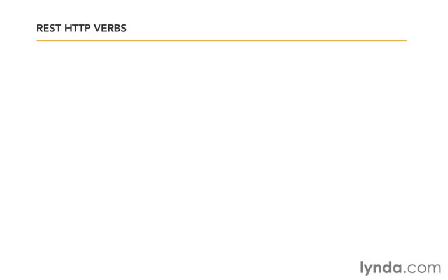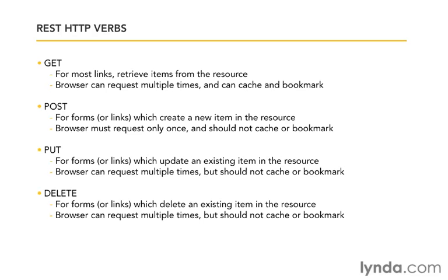We need to adopt some new verbs to perform actions on resources. There are four HTTP verbs: GET, POST, PUT, and DELETE. GET and POST you recognize from before. In REST, GET is for most links — we are getting information back. In our simple CMS, we used POST for forms that create, update, and delete items. The difference is that in REST, POST is only used for creating a new item. When we want to update an existing item, we use PUT. When we want to delete an item, we use DELETE.